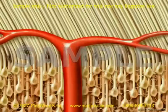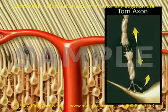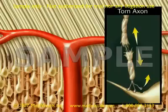The axons may be completely torn, partially torn, or separated from their connections with other cells. Thousands or even millions of scattered axons may be torn, but unless some of the larger and more resilient arteries are also torn, no bleeding occurs.